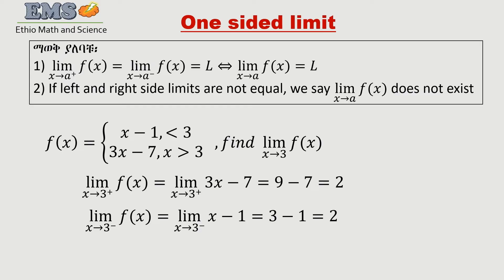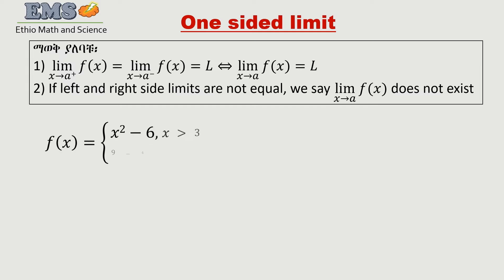From the left side, as x approaches 3 from the left, we use the other piece of the piecewise function. Taking the left-side limit, both the right-side limit and the left-side limit come out equal. So the limit of F of x as x goes to 3 exists.